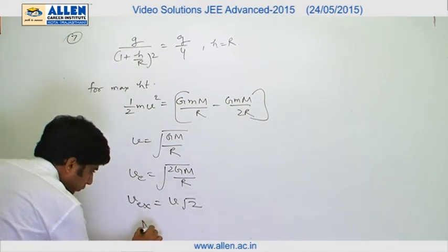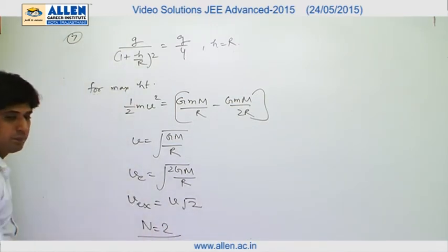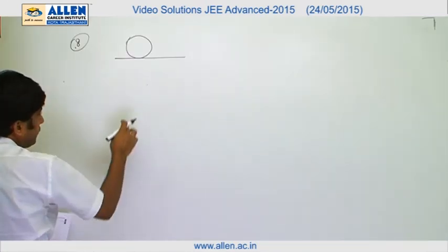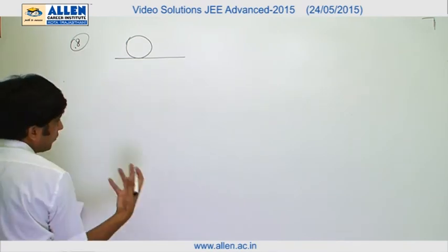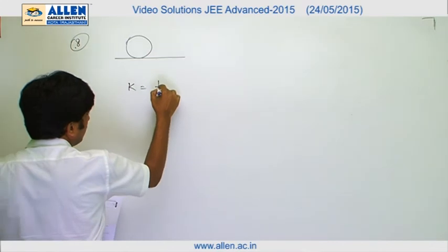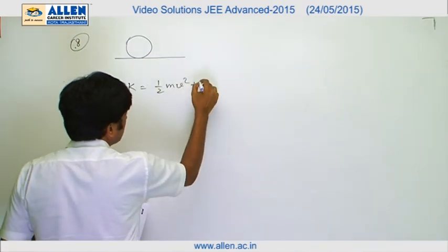In this question, disk is rolling on the floor, and if it rolls then its expression of kinetic energy will be given by K = ½mv² + ½Iω².